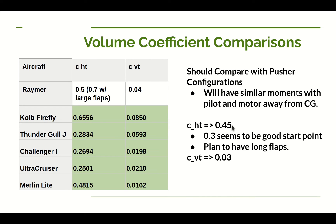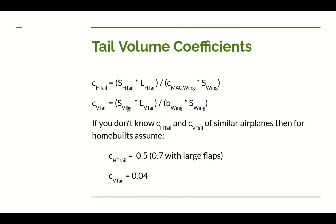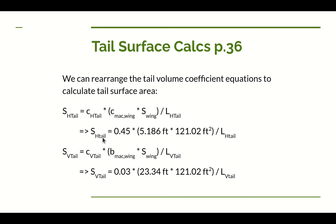With the large-flap horizontal tail coefficient of 0.45 and vertical tail coefficient of 0.03, we can now start calculating surface areas and lengths. Dan covers this direct calculation on page 36 of his book. The equations for horizontal and vertical tail surface areas are rearranged versions of the coefficient formulas. Known values — wing chord, wing span, and wing area from previous videos — are plugged in, but the tail moment-arm lengths remain to be determined.